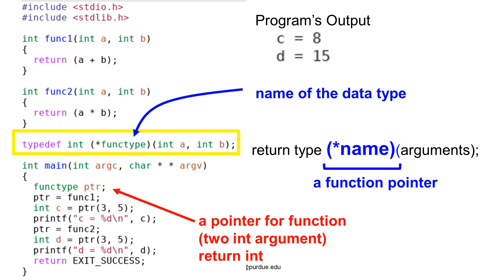Let's inspect this line carefully. The line starts with typedef, meaning we are going to create a new data type. The next word is int — this is the return type of the function. We know this is a function pointer because of the syntax using parentheses and asterisk. Inside the parentheses, after the asterisk, is the name of the new data type. In this example, the new data type is called functype.